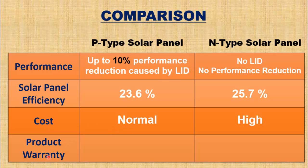The last difference is product warranty. Manufacturers offer 12 years of product warranty for P-type solar panels, and 20 years of product warranty for N-type solar panels.